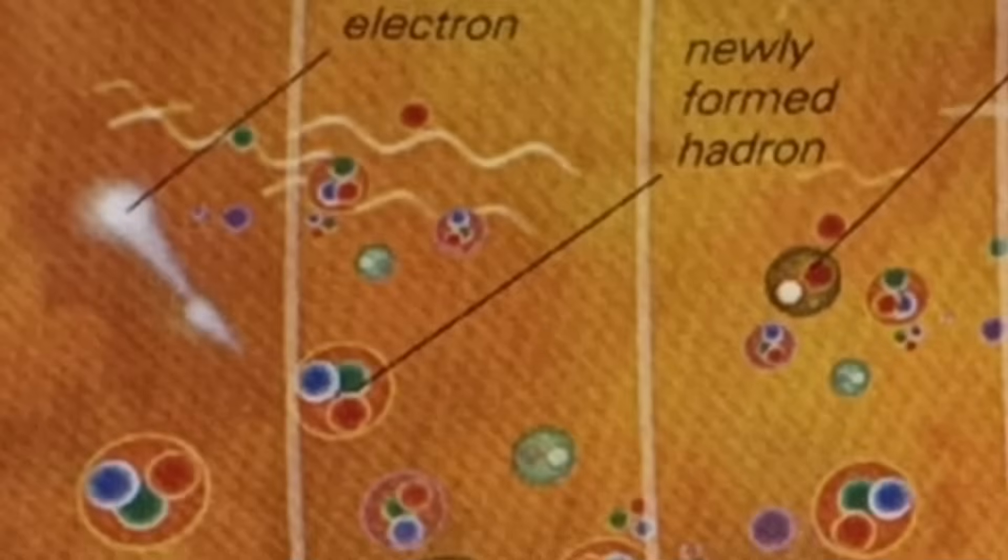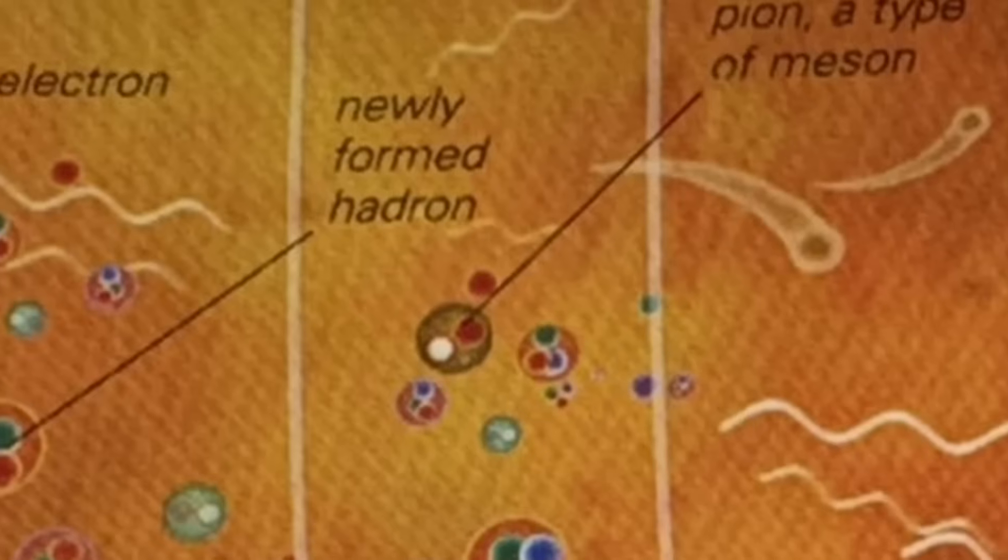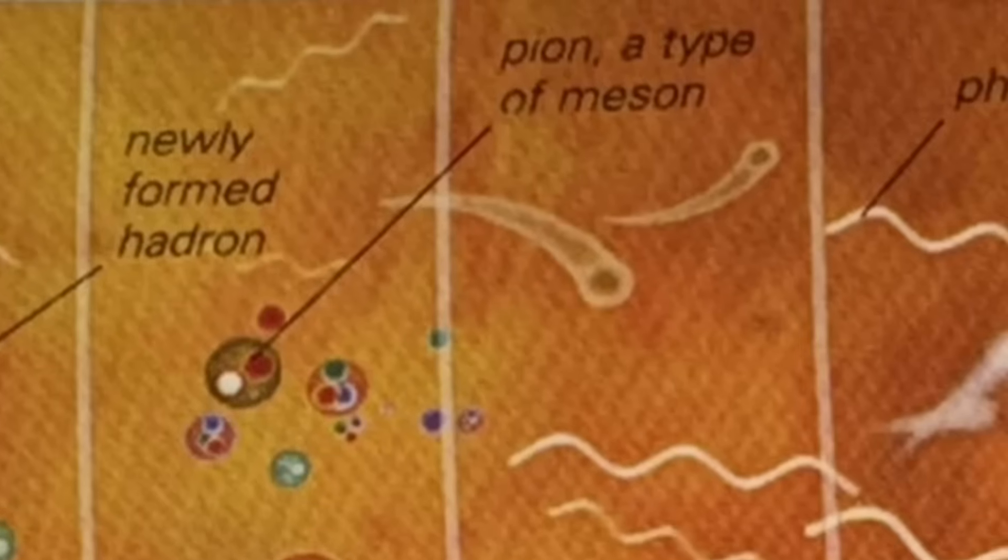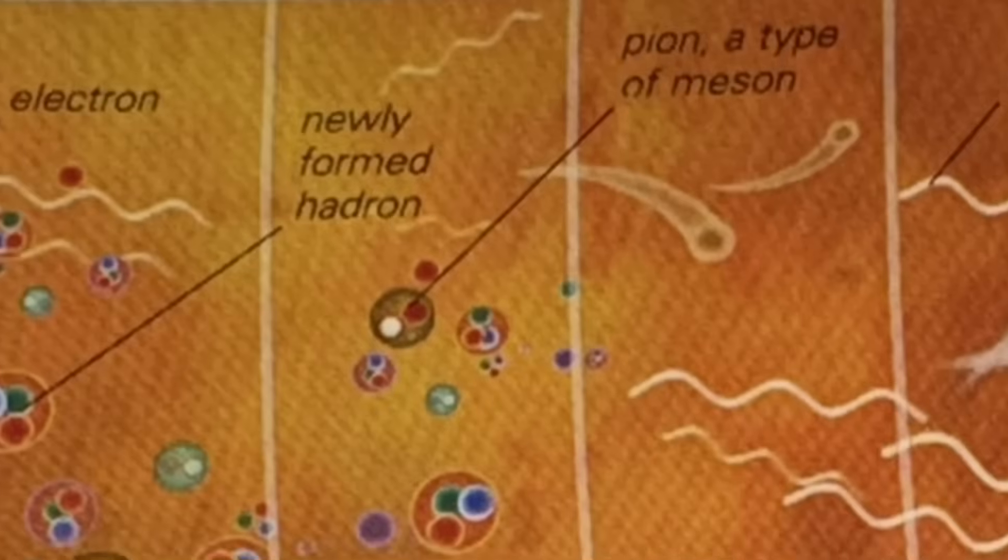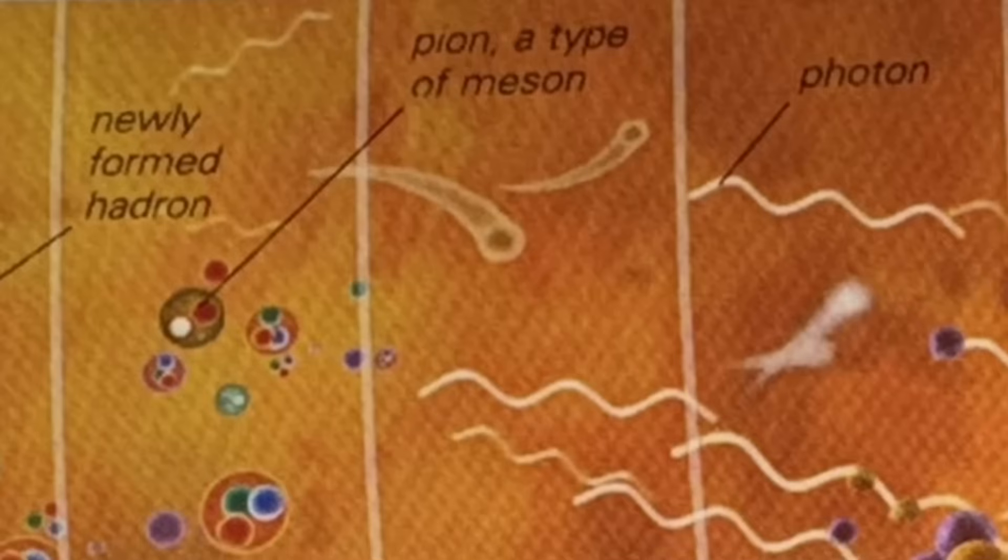One microsecond after the Big Bang, the Hadron era began. By the start of the era, the observable universe had inflated to around 60 billion miles in diameter and was around 18 trillion degrees Fahrenheit. Within the plasma, there were quarks, anti-quarks, and gluons, mixed with vast quantities of radiant energy and photons.